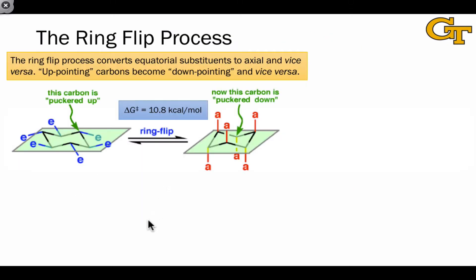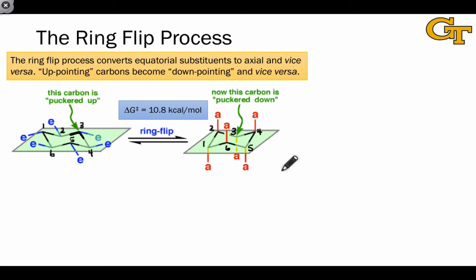In addition to flipping the headrest and footrest carbons, the ring flip process converts equatorial substituents to axial and vice versa. In the course of the ring flip, carbon 3 begins in a puckered up position with the C-C bonds associated with carbon 3 forming an upward pointing point. After the ring flip, carbon 3 is oriented down, now underneath the average plane of the six carbons. That carbon is now puckered down, and its substituent goes from an equatorial position to an axial position. This equatorial down position has been converted into an axial down position by the ring flip.